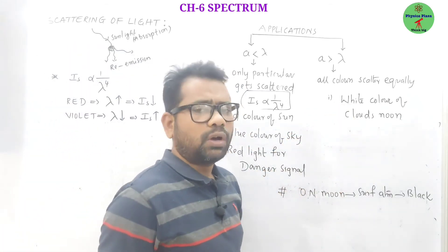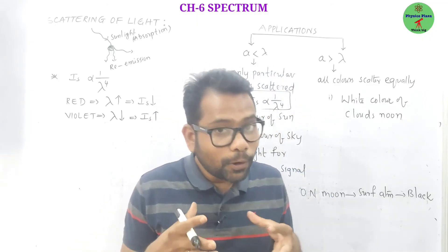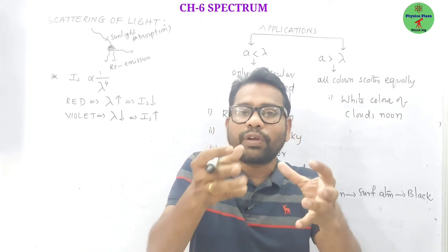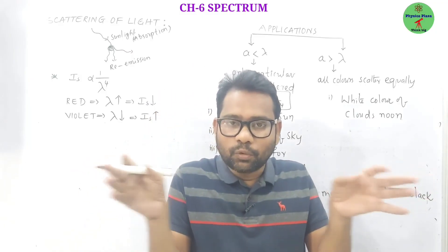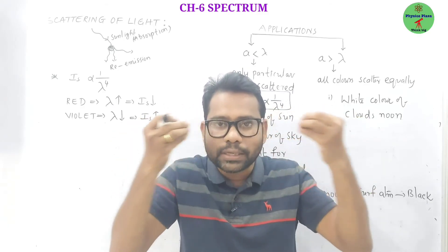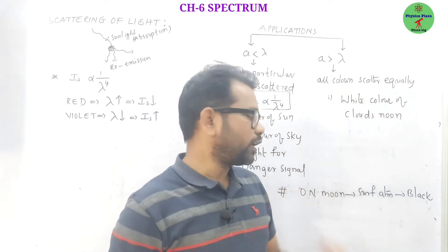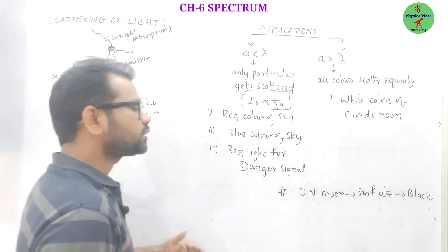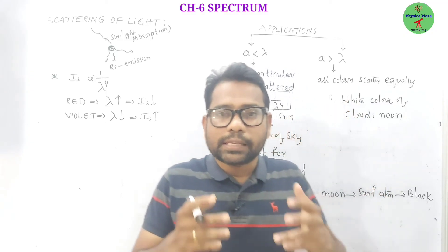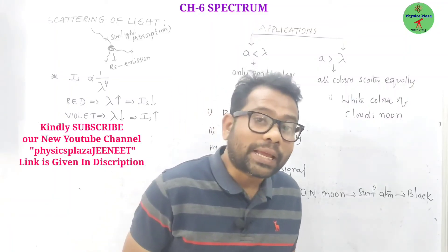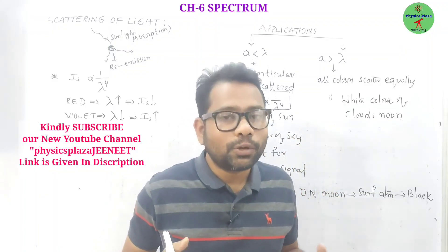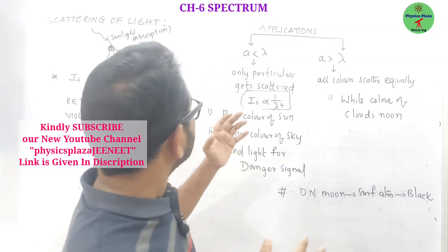Application 4: White color of clouds. Clouds consist of water molecules and dust particles whose size is much bigger than the wavelength of light. So all colors get scattered equally — all scattered light reaches our eye in the same amount — and the combination of all colors gives white. That is why clouds appear white. Finally, from the moon's surface, the sky appears dark black because there is no atmosphere, hence no scattering occurs.